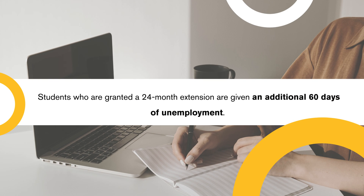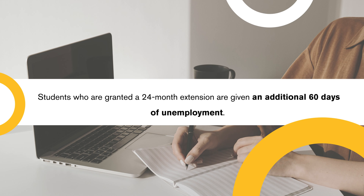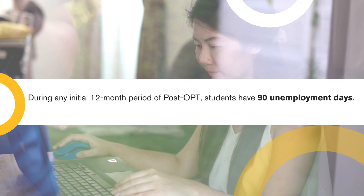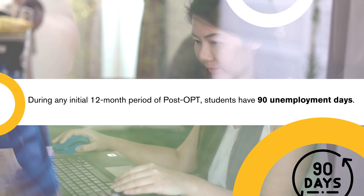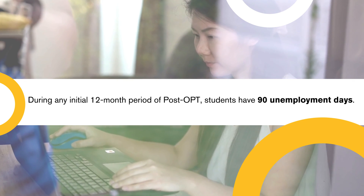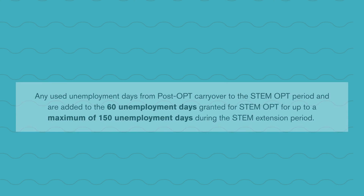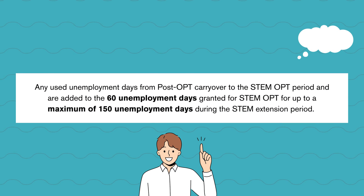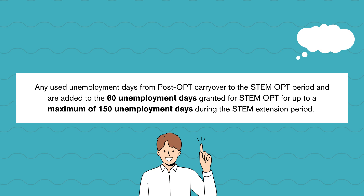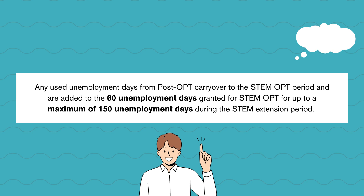Students who are granted a 24-month extension are given an additional 60 days of unemployment. During any initial 12-month period of post-OPT, students have 90 unemployment days. Any used unemployment days from post-OPT carry over to the STEM OPT period and are added to the 60 unemployment days granted for STEM OPT, up to a maximum of 150 unemployment days during the STEM OPT extension period.